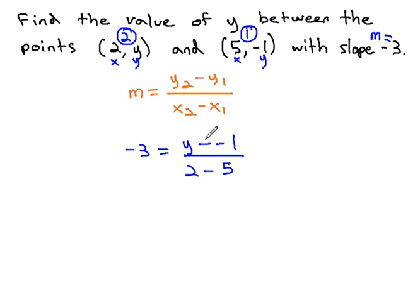Let's clean this up a little bit. Minus negative 1 in the numerator is the same as adding, so we have -3 equals y plus 1 over, and 2 minus 5 is -3. Now we have an equation we can go through and solve to find this missing point.